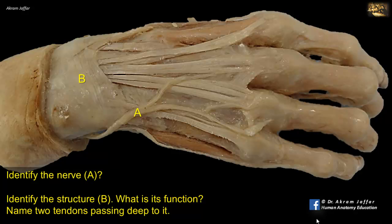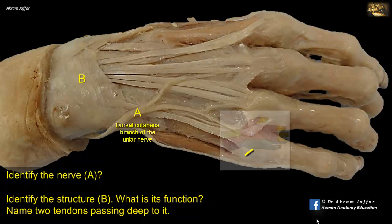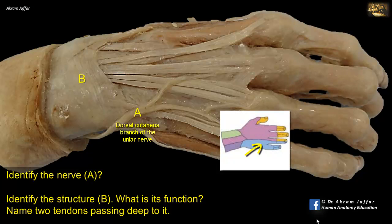The nerve A is the dorsal cutaneous branch of the ulnar nerve, given off in the forearm, passing dorsally to supply the medial third of the dorsum of the hand and the medial one-and-a-half digits on the ulnar side, proximal to their nail beds.